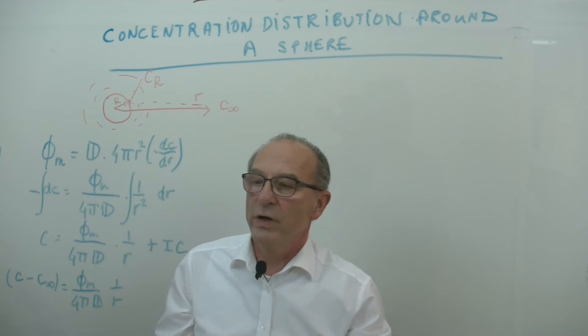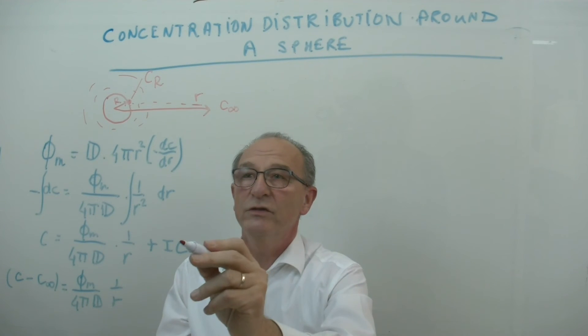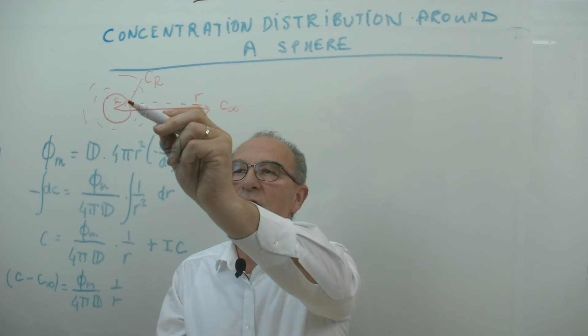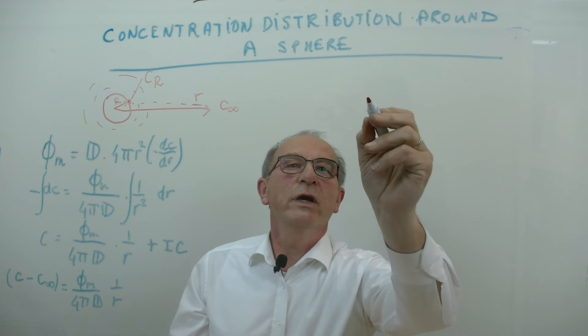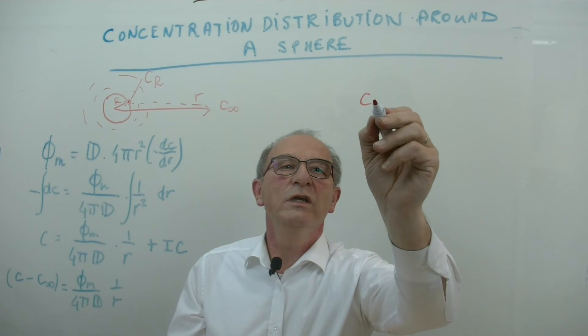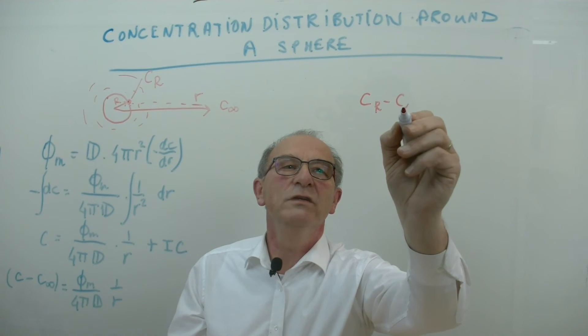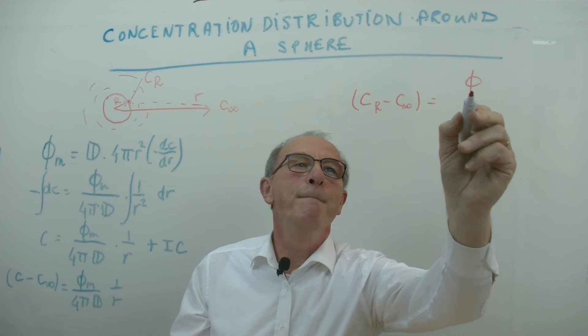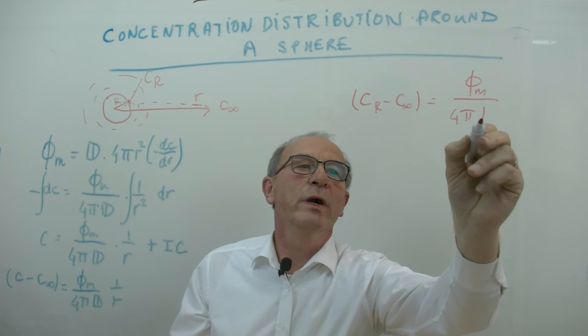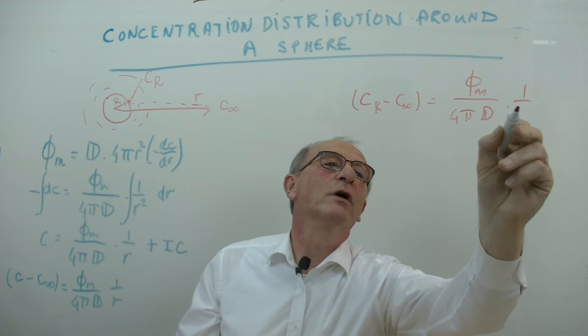But we could also write another integration constant because at the surface, at R is R, it is also cR. So another equation will be cR minus c infinity is equal to phi m divided by 4 pi d, 1 over R.